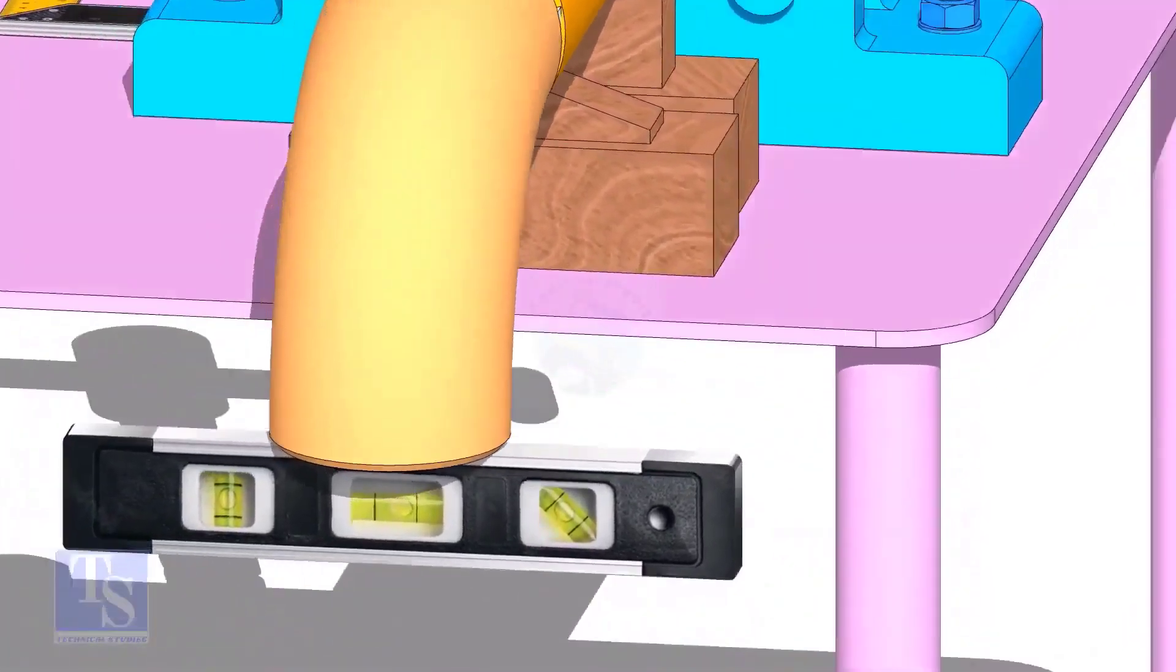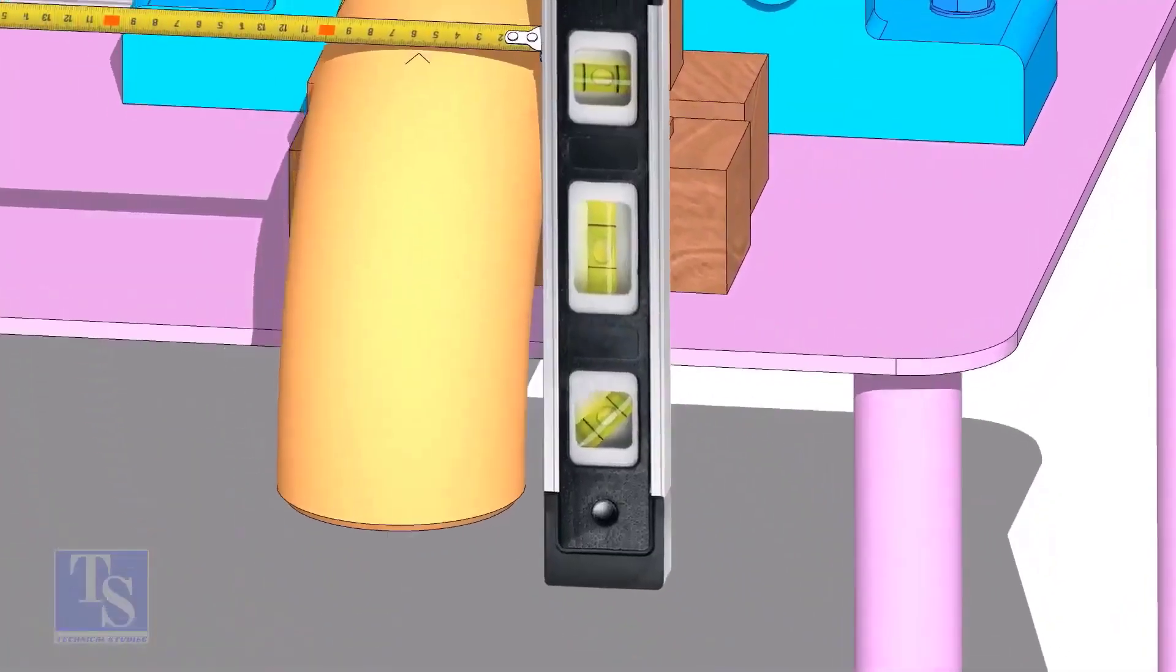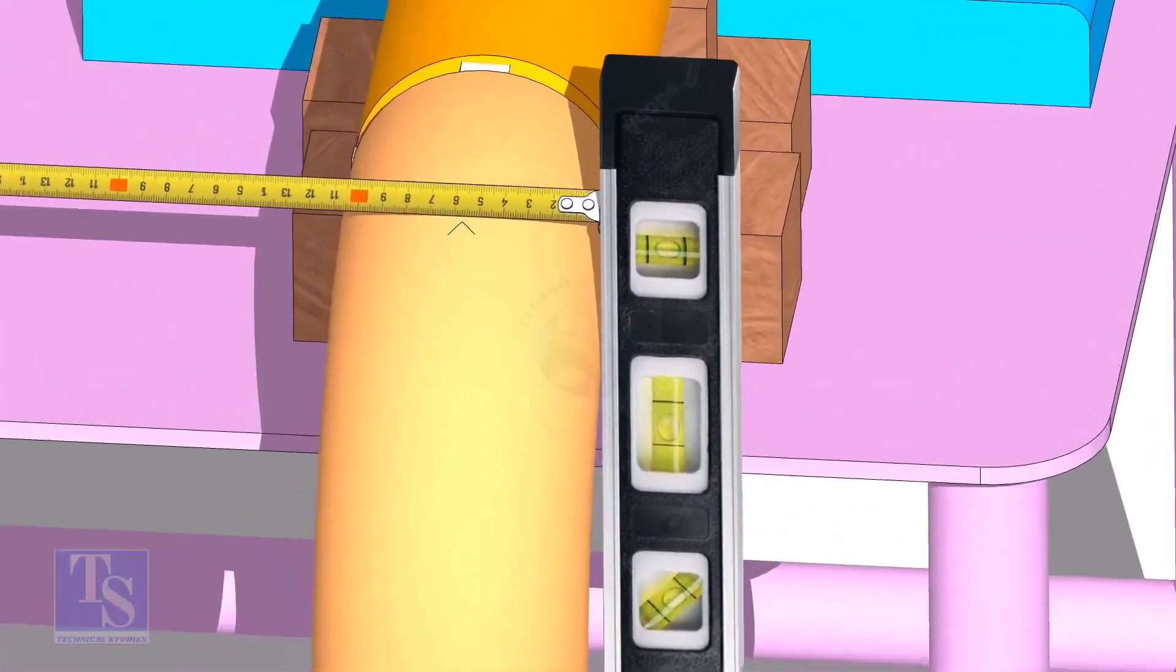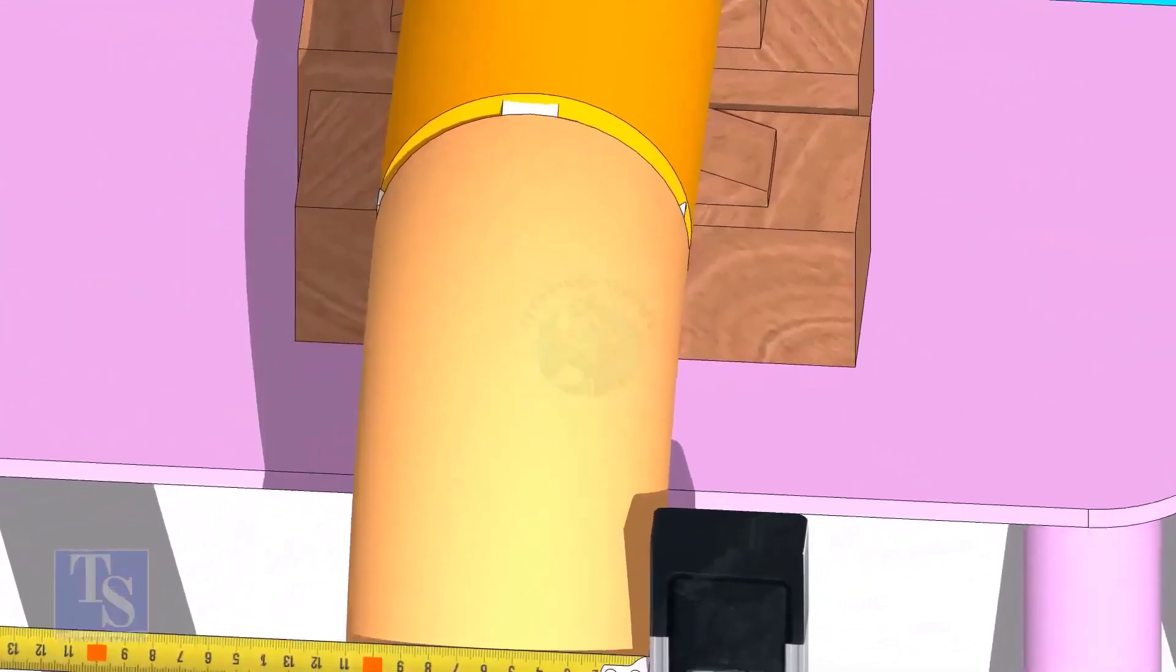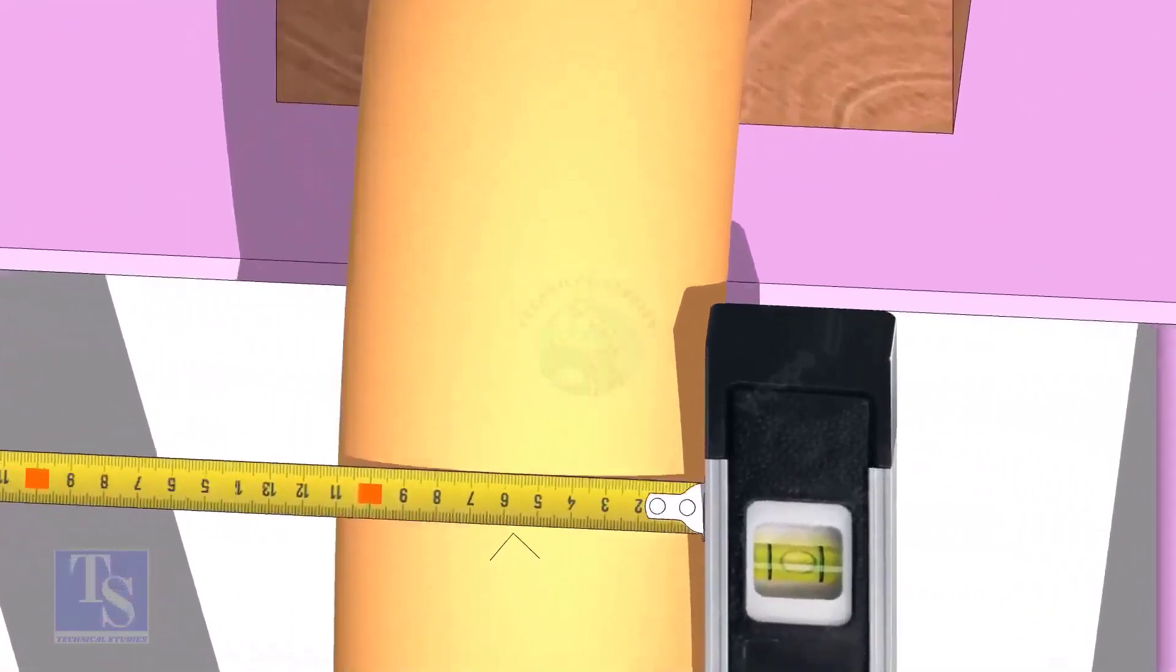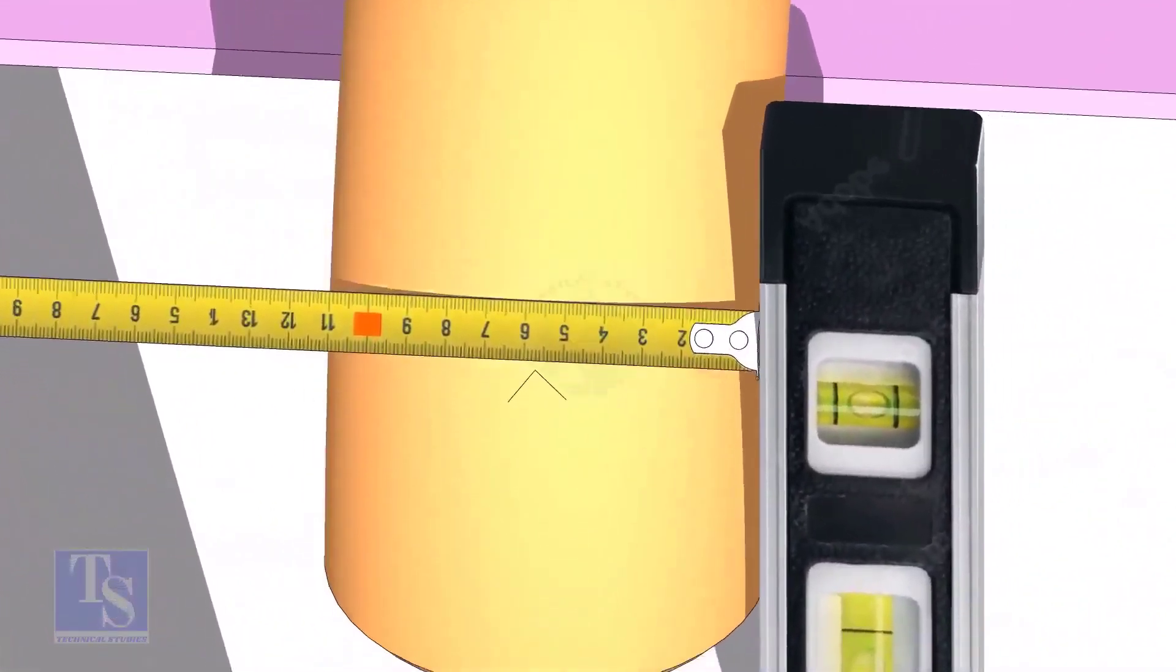Mark the center line of the elbow. The OD of a 4 inch pipe is 114mm. Hold a level bottle at the side of the elbow vertically, and mark 57mm on the elbow at least three locations, as shown.